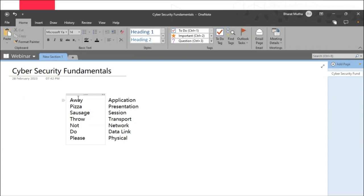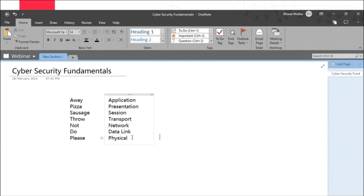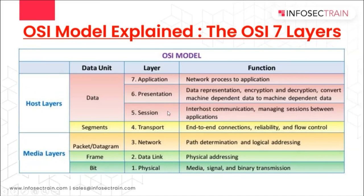From a top-down approach another mnemonic can be 'All People Seem To Need Data Processing.' The Application, Presentation, and Session layers comprise the upper layers of the OSI model — software layers with application-specific functions like data formatting, encryption, and connection management. The Transport, Network, Data Link, and Physical layers are known as the lower layers — some call them hardware layers — providing network-specific functions like routing, addressing, and flow control.